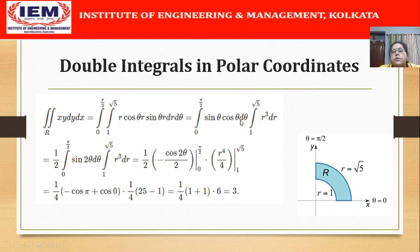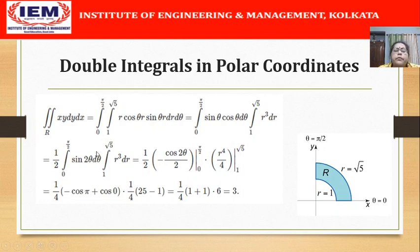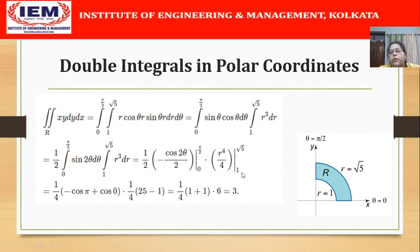The integral separates into R³ dr with limits 1 to √5, and sinθ cosθ dθ with limits 0 to π/2. Writing sinθ cosθ as (1/2)sin2θ and integrating gives −cos2θ/4, evaluated from 0 to π/2. Integrating R³ gives R⁴/4, evaluated from 1 to √5. Putting in the limits and simplifying, the final answer is 3.